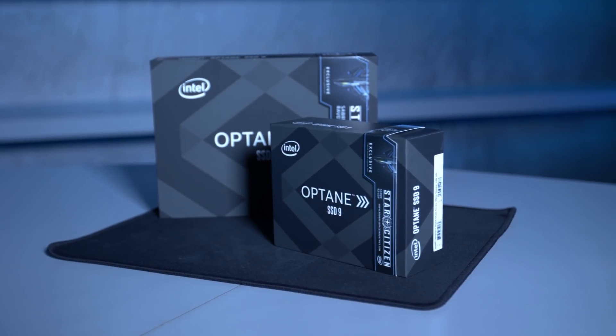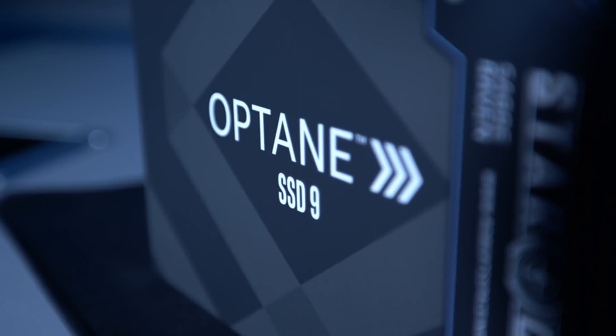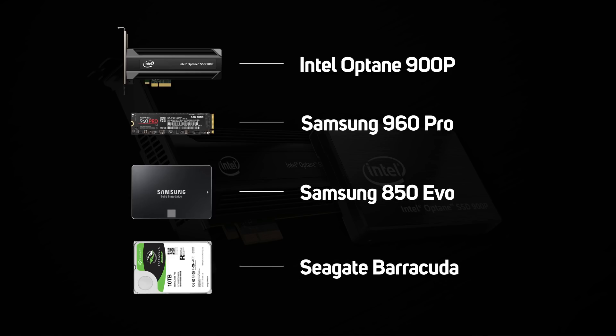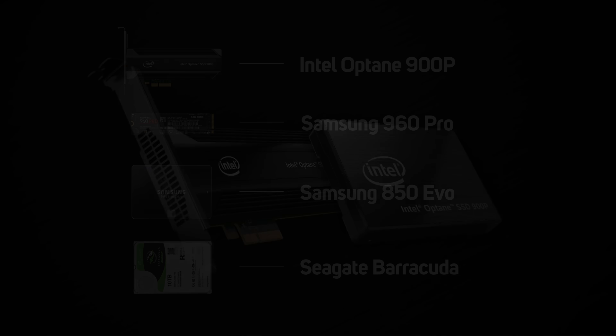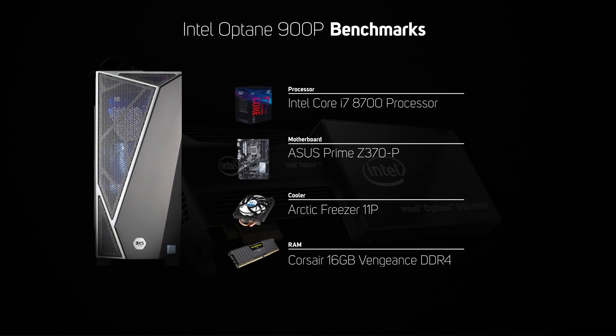To see how all those tech specs translate into real-world performance, we benchmarked the new Intel Optane 900p SSD head-to-head with some of the most popular drives on the market. The other drives on test were the 512GB Samsung 960 Pro SSD, 500GB Samsung 850 Evo SSD, and a 2TB Seagate Barracuda hard drive. All the drives were tested in one of our 3XS gaming PCs, which you can see the full spec of on screen now.